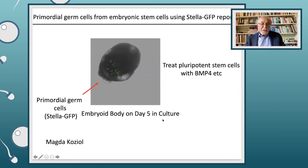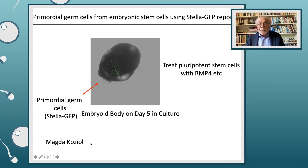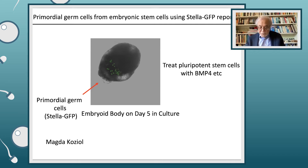Finding this kind of reporter also made it possible to ask whether we can take pluripotent stem cells and make primordial germ cells from them. This is one very early experiment by one of my rotation students, Magda Koziol, who made what we call an embryoid body. You can see here expression of Stella, which told us it is possible to make primordial germ cells from pluripotent stem cells.